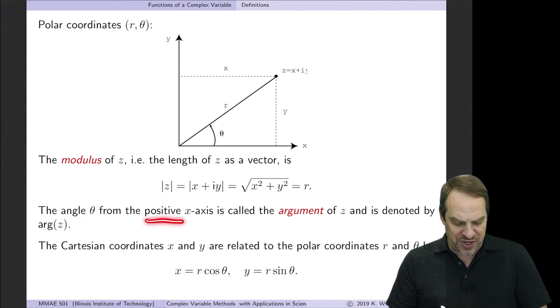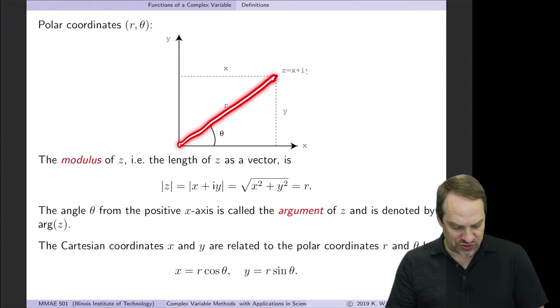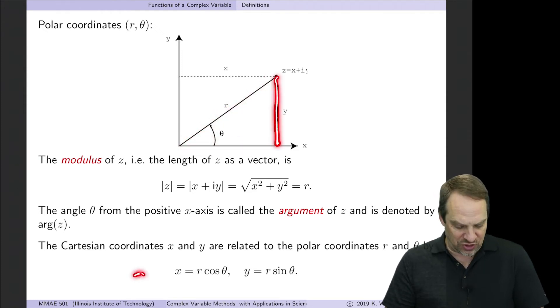Now this angle theta is measured from the positive X-axis. That's called the argument of Z. So whenever you hear the argument of Z, that's that angle theta from the positive real axis. Now, as I said, we can go back and forth between Cartesian and polar coordinates using just these geometric relationships. X is R cosine theta, which you see here. R times cosine theta will give us this length. And R times sine theta will give us this length. So we can go back and forth between X and Y or R and theta.